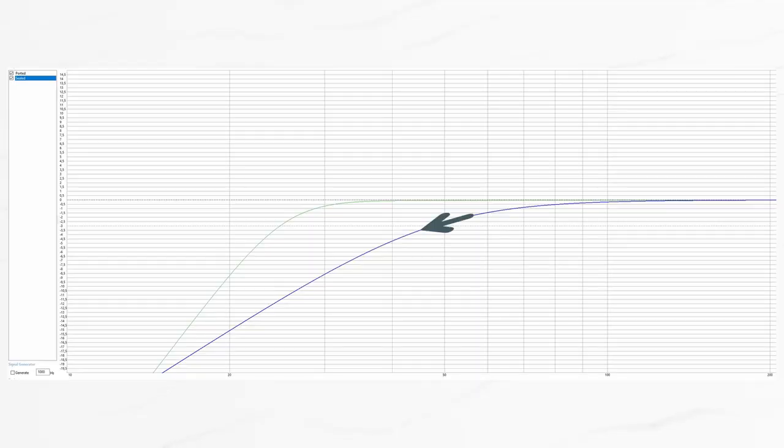For the sealed box, the roll-off is smoother as the back waves don't meet with the front waves at all.